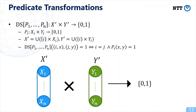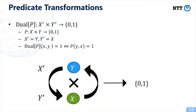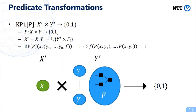Direct sum is a transformation for combining many predicates into one predicate. Dual is a transformation for switching the key attribute domain and ciphertext attribute domain. KP1 is a transformation for injecting a policy into the key attribute domain.